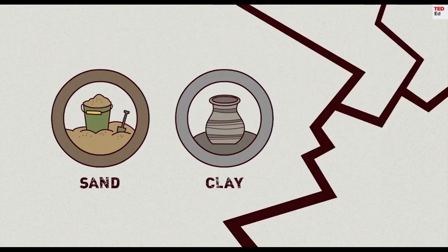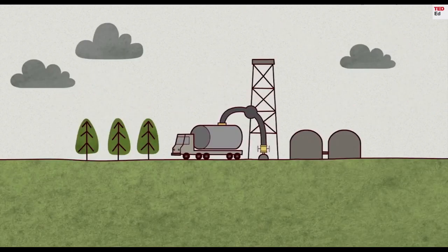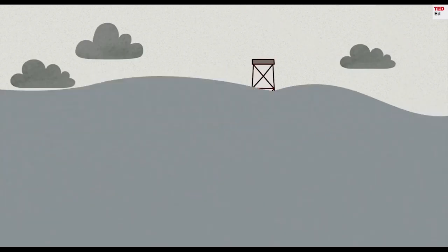Sand or clay is also mixed into the water to prop open the fissures, so the gas and oil can keep leaking out even after the pressure is released. It's estimated that all of fracking's intense pumping and flushing uses an average of three to six million gallons of water per well.